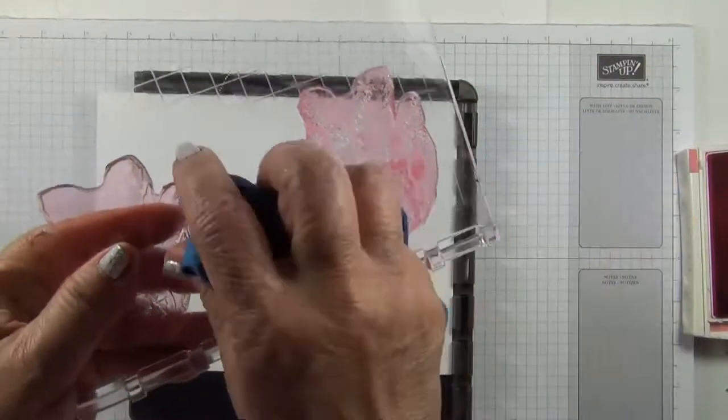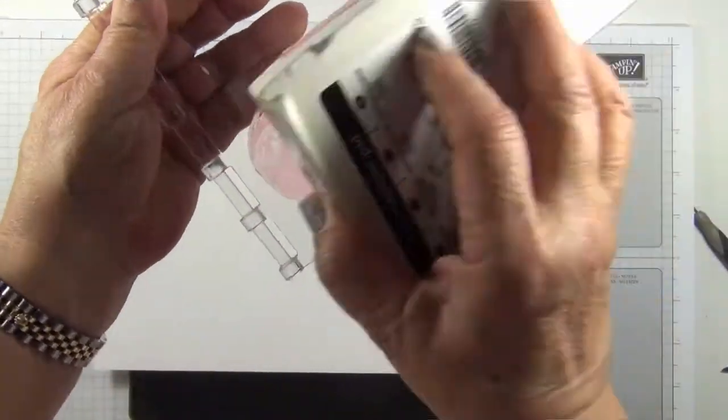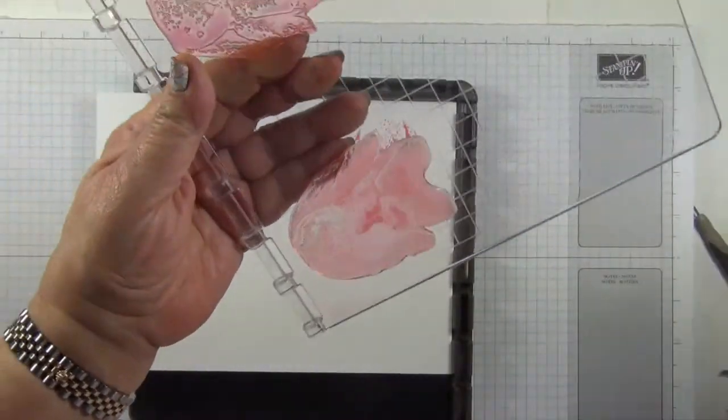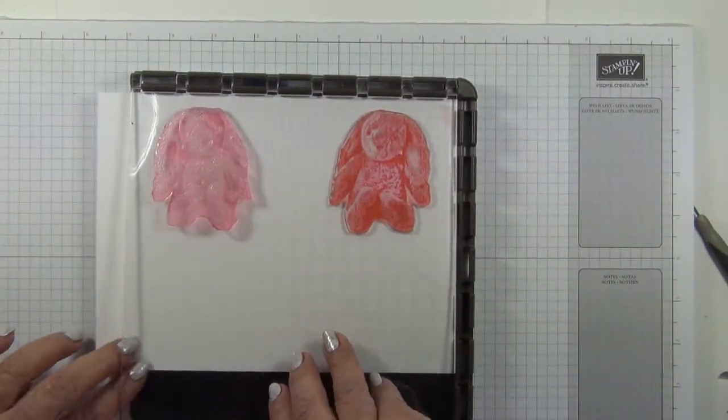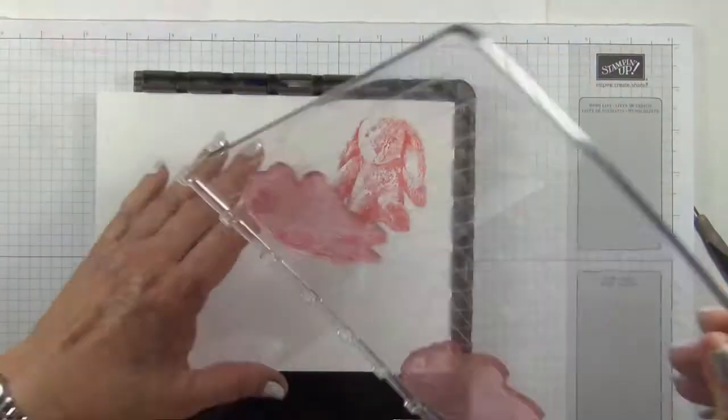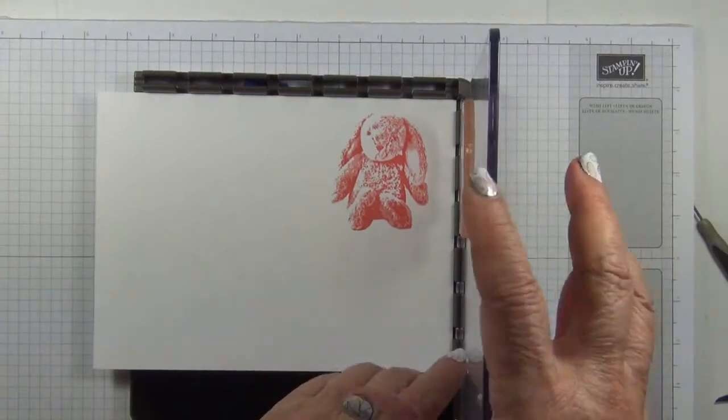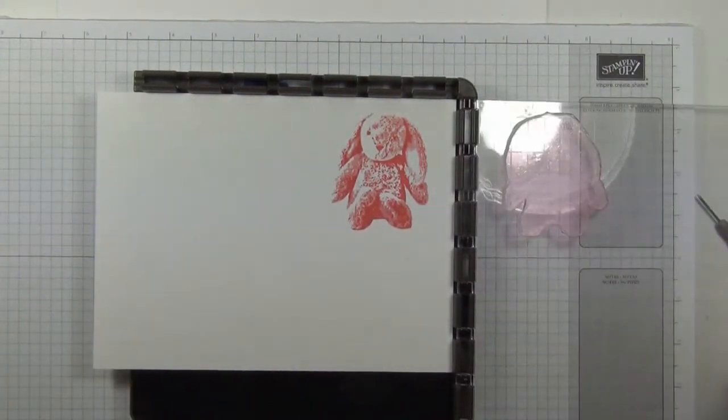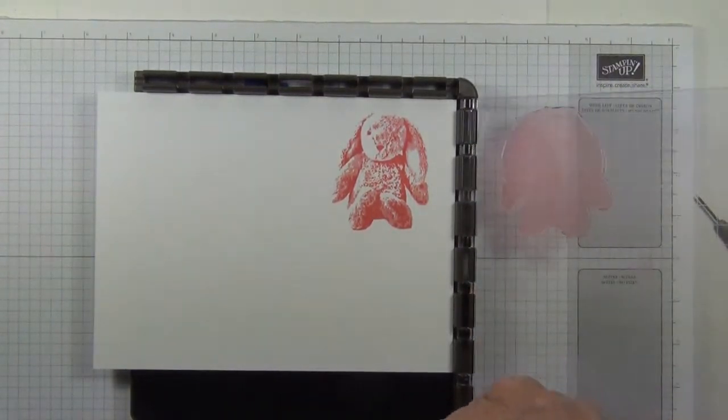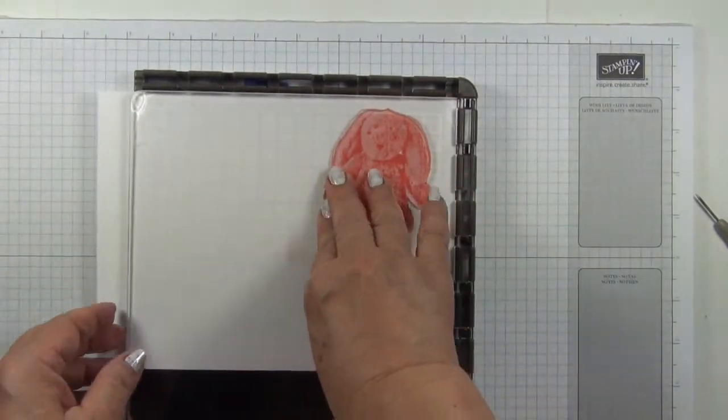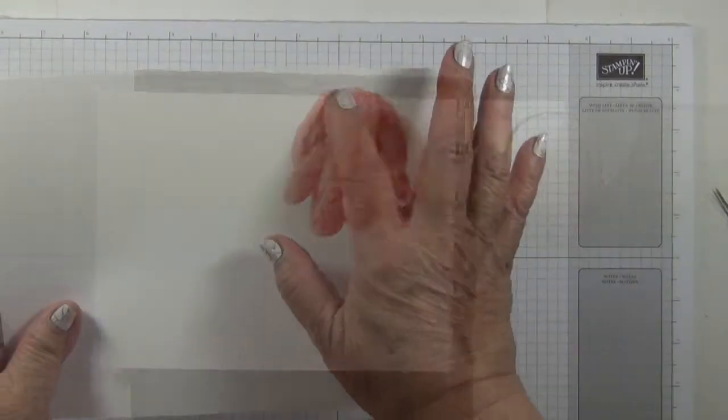Clean with the absorber cloth. Ink up the second image with Blushing Bride which is the medium color. Stamp, clean. And for the third stamping I've used the second acrylic plate and inked it up with the lightest color in Powder Pink. And then I'll fussy cut it.